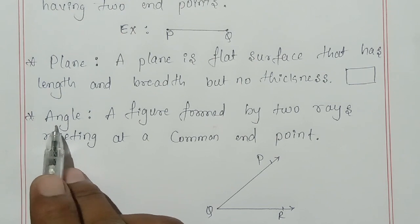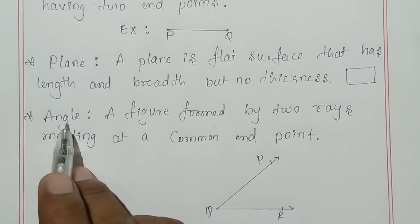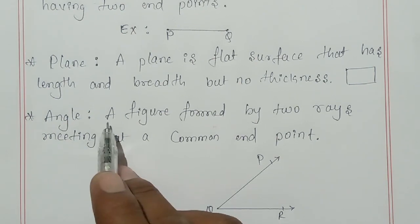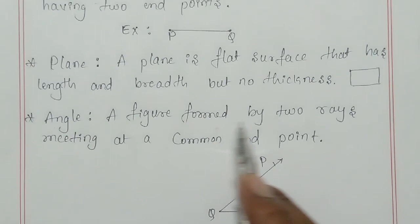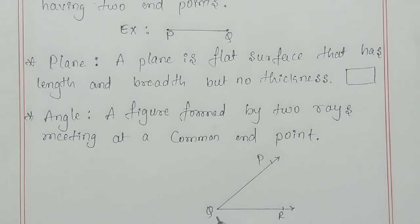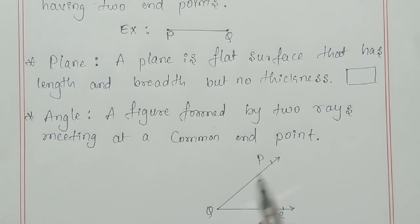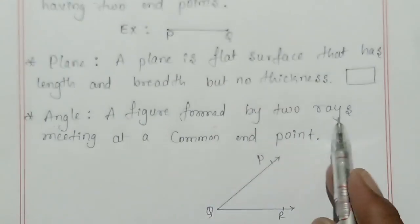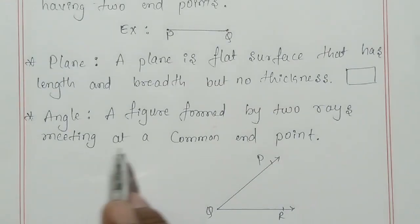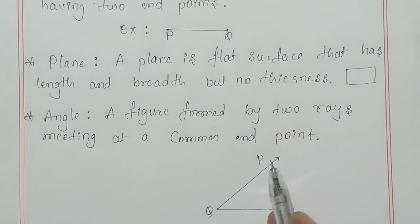Next I will explain angle. What does angle mean? An angle is a figure formed by two rays meeting at a common end point. This is the figure — it is formed by two rays. This is one ray and this is another ray.